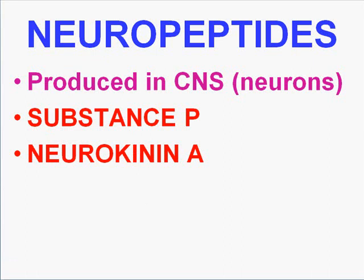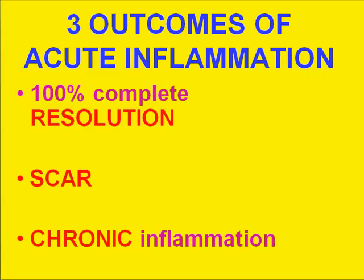Now we're going to get into something very logical. We're going back to the saga to talk about the only three possible outcomes of acute inflammation. We talked about the saga, the chemicals, and some of the processes. Now let's talk about what the only three possible outcomes could be.